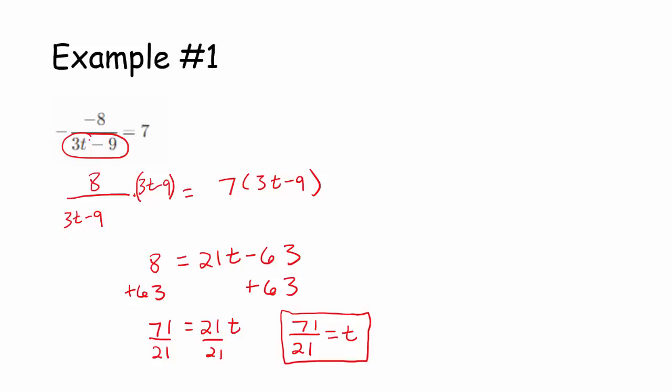So, thinking about this, what value of t would make the expression 3t minus 9 equal 0? I'm just going to go off here to the side, and sort of solve the equation 3t minus 9 equals 0.